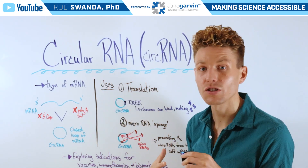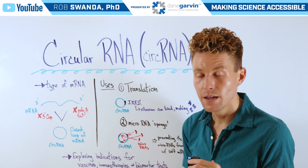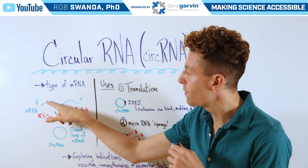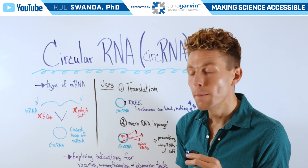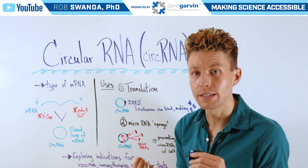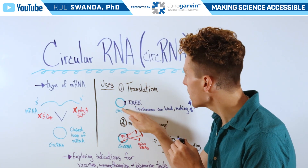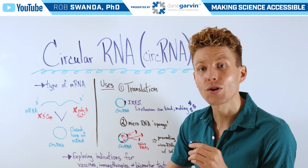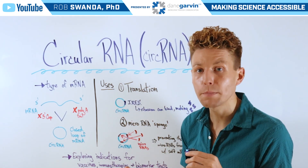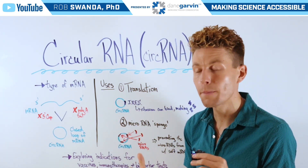But how can circRNA actually be used? Well first, it could be used for translation, or the production of proteins. Typically, a ribosome would need to bind to the 5' end of an mRNA strand, but with a circRNA there is no 5' end. It can be engineered to have an IRES, or internal ribosome entry site, where a ribosome can bind and begin scanning along the RNA, reading it and turning it into proteins. Additionally, it can continue to read that circRNA multiple times, producing a higher concentration of proteins from one circRNA compared to mRNA.